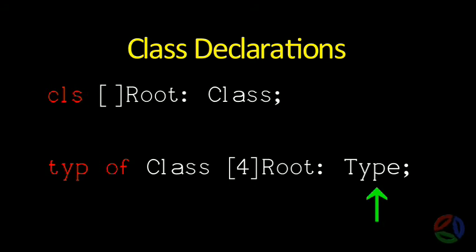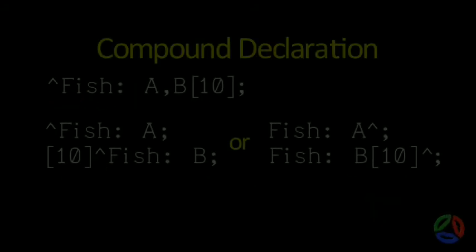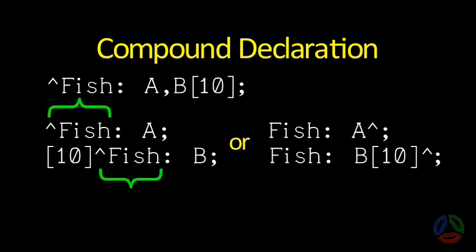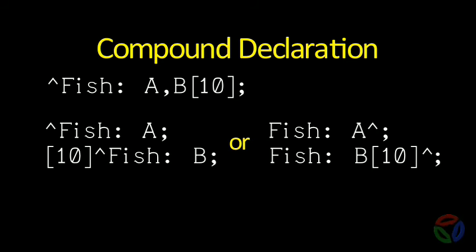Keywords are shown in red. The declaration of items A and B given here on top is equivalent to the two individual declarations given below. Note that the shared type is replicated for each of the two items being declared. The shared type logically follows and is low order to the individual linkages associated with each item in the compound declaration.